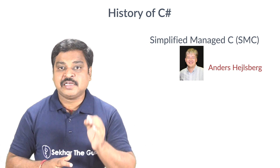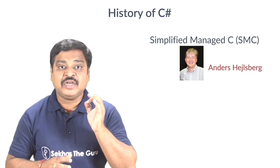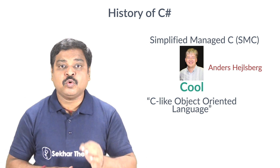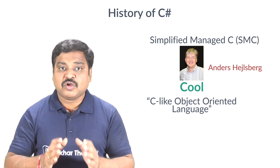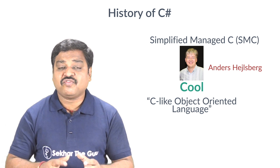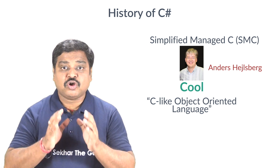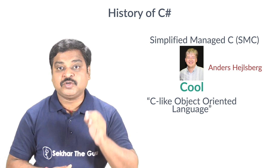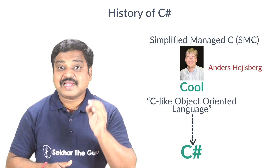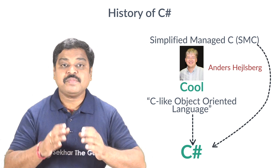In 1999, Anders Hejlsberg formed a team to build a new language called COOL, which stands for C-like Object Oriented Language. Microsoft had considered keeping the name COOL as the final name, but due to various marketing and trademark reasons, by the time the .NET project was publicly announced in 2000, the language was renamed as C Sharp, and the class libraries and ASP.NET runtime were imported to C Sharp from SMC.